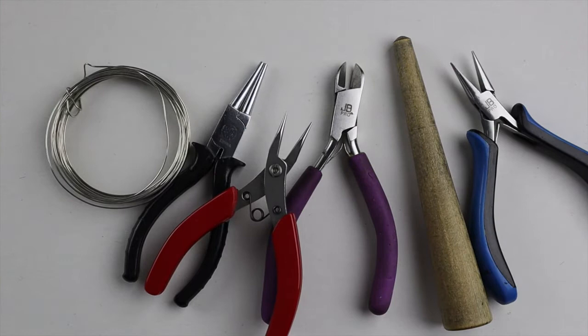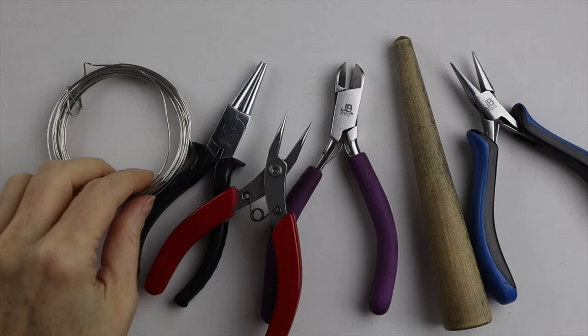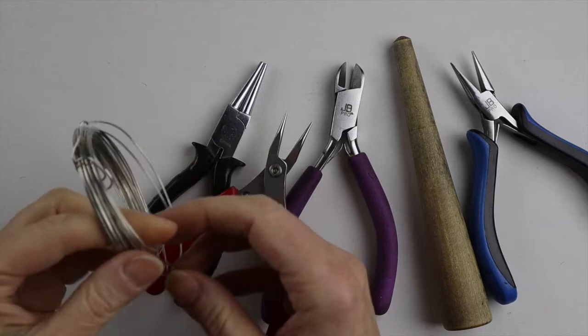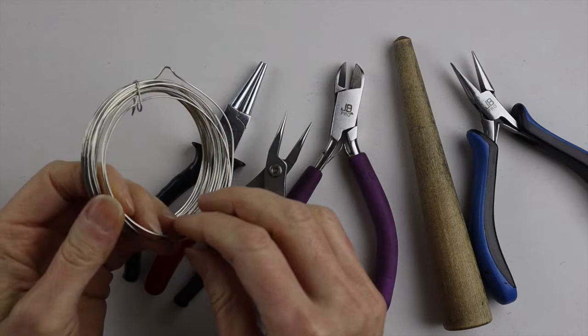So what you're going to need for this project is a ring cone, your jewelry pliers, and for this one I'm going to use 20 gauge copper wire that I bought at Michael's, but you can use a slightly thicker gauge, 18 gauge, if your wire is kind of soft. You want it to be sturdy enough.